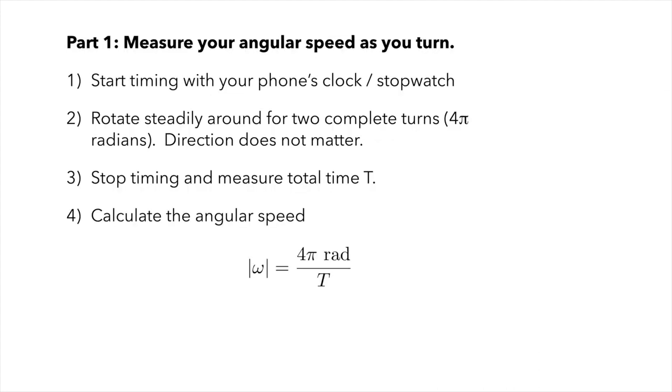In part one of the lab, you'll be measuring your angular speed as you turn through two rotations. Just measure the amount of time it takes you to turn twice steadily in one direction. We don't care which way we're going. We will only consider the absolute value. Time two rotations, which is four pi radians, and calculate the angular speed by dividing four pi radians by the time that you measure to turn through two rotations.